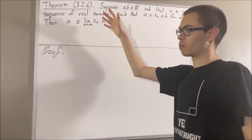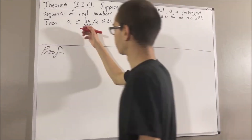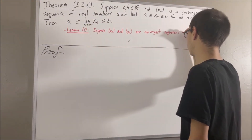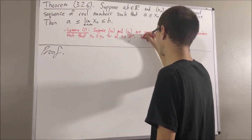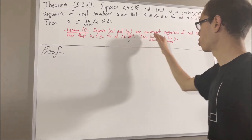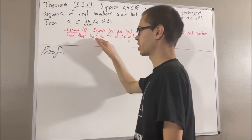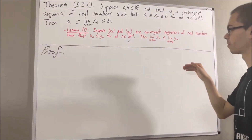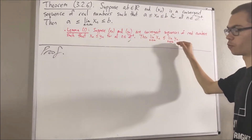Now, in proving this theorem, we are going to use the following preliminary result. Suppose xn and yn are convergent sequences of real numbers, such that xn is less than or equal to yn for all positive integers n. Then, the limit of xn is less than or equal to the limit of yn.